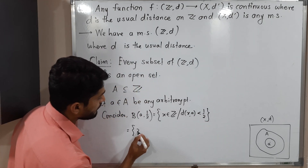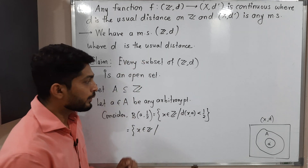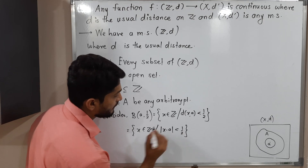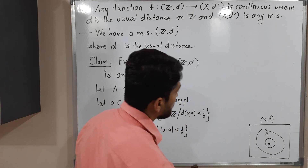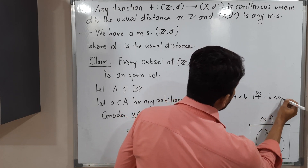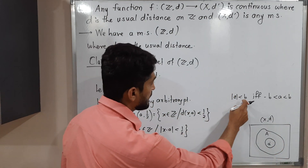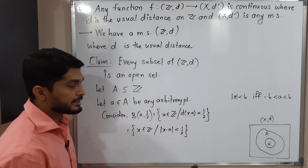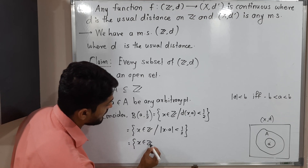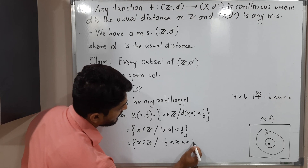This equals {x ∈ Z_d : d(x, a) < 1/2}. Since d is the usual distance, this means |x − a| < 1/2. We are familiar with the result that |a| < b if and only if −b < a < b. Using this result with b = 1/2 and a = x − a, we get: {x ∈ Z : −1/2 < x − a < 1/2}.